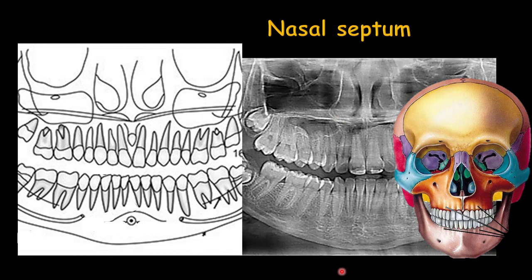The nasal septum is the bony part between the nasal holes. It is made of the vomer bone and the perpendicular plate of the ethmoid bone. You can see it in this panoramic radiograph.